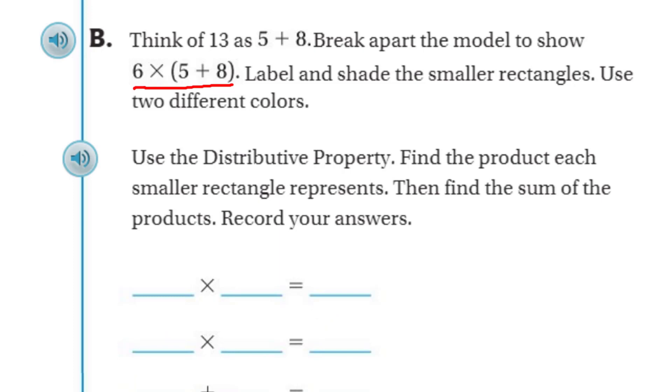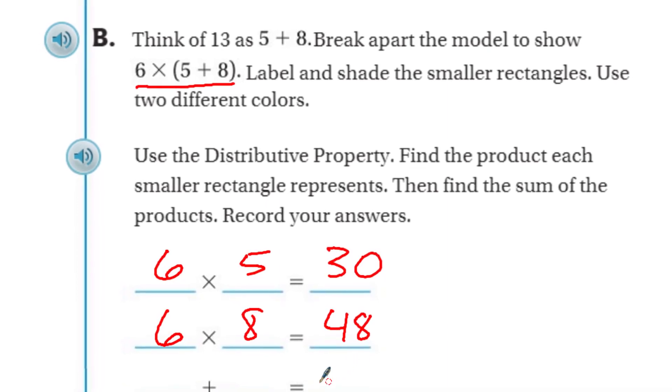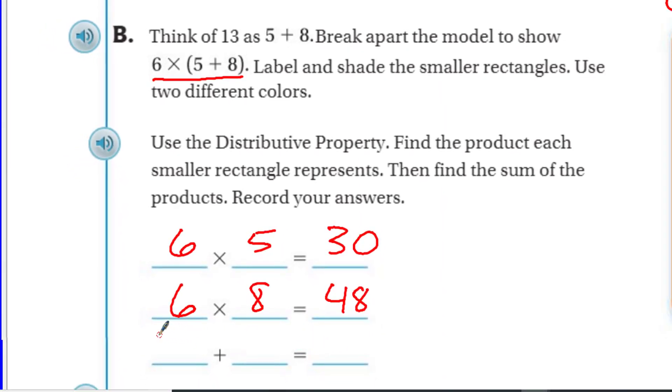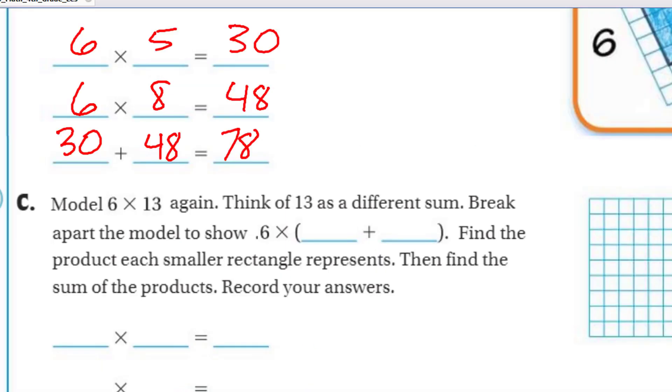We're going to the next step. It does say, use the distributive property, find the product each smaller rectangle represents. Then find the sum of the products. Record your answer. So we have one product here, because we're going to take 6 times 5. So 6 times 5 is going to be equal to 30. That's that first smaller rectangle. The next one is the 6 times the 8. And of course, 6 times 8 equals 48. Know my timetable. It says, then find the sum of the products. So if we have 30 plus 48, because they're both sums, and it says record our answer. Now we have 78. I'm just looking up and kind of checking my work.